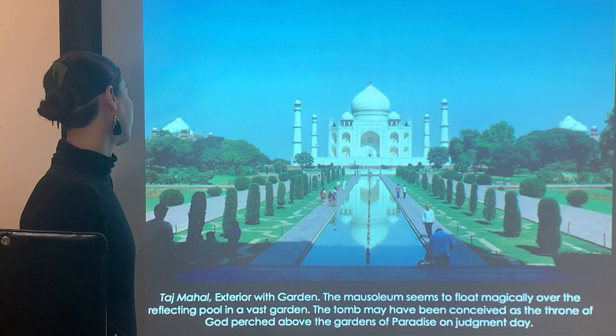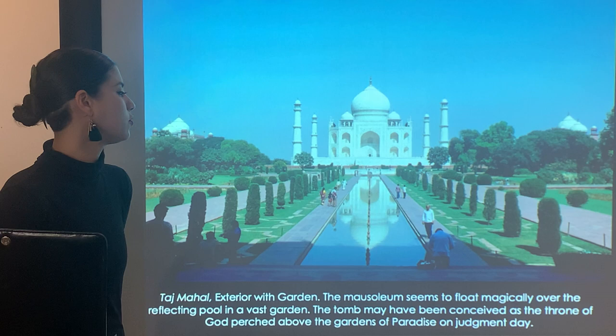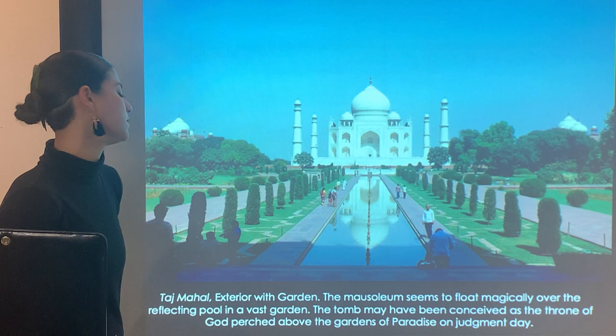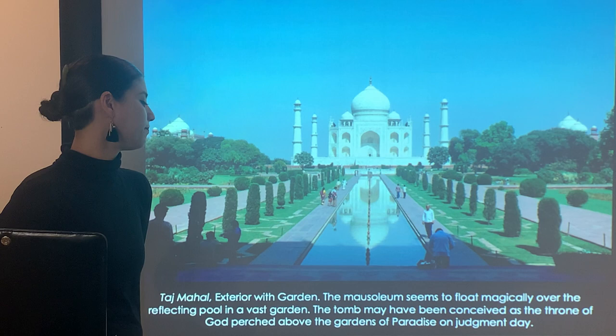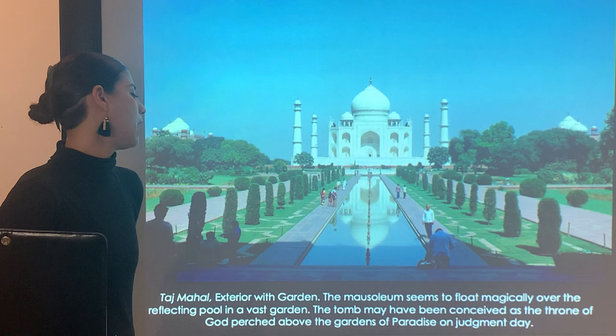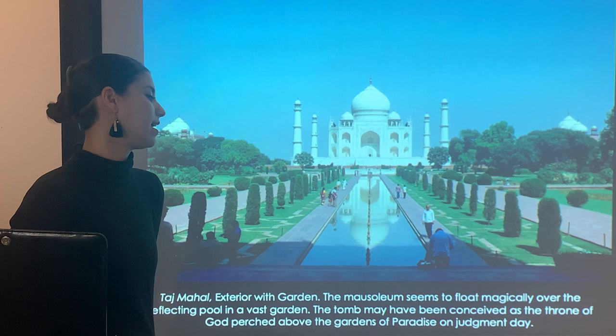Looking at shots from around the reflecting pools in the grounds of the Taj Mahal, we can see that the mausoleum seems to float magically over the reflecting pools in a vast garden. We know how important those reflecting pools were to Islamic architecture. The tomb may have been conceived as the throne of God perched above the gardens of paradise on Judgment Day.